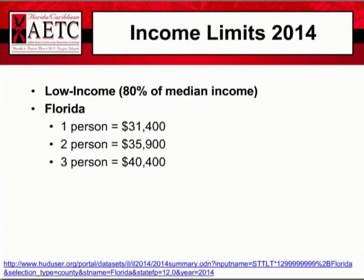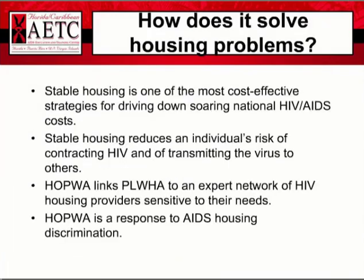Income limits for 2014: to qualify for HOPWA-funded housing, you need to have 80% of the median income for one, two, or three persons. HOPWA-funded housing is an effective platform for linking PLWH to care and improving health outcomes, and promotes cross-collaboration with programs in HUD. Research continues to demonstrate that housing stability significantly increases HIV-positive clients' entry into and retention in care, and increases their adherence to complex HIV treatment regimens, resulting in improved health outcomes and reduced HIV transmission. Homeless persons with HIV and AIDS experience increased morbidity and mortality, more hospitalizations, and decreased adherence to antiretroviral treatments, compared to those who are stably housed.